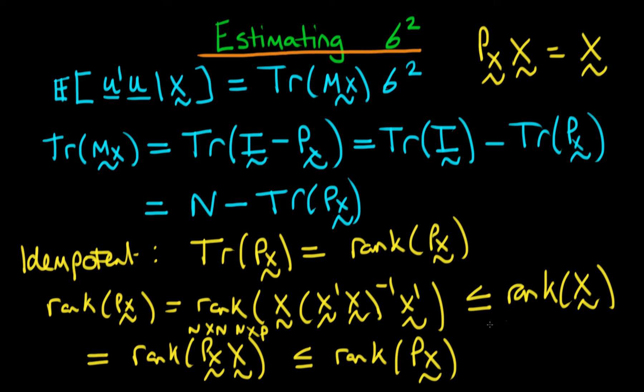And the only way that this chain here can actually make any sense is if all of the inequalities—this one here and this one here—are just equalities. Hence we have that the rank of px is equal to the rank of x, and the rank of x if it's full column rank is just given by the number of independent variables, which in this circumstance is p.